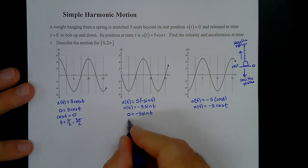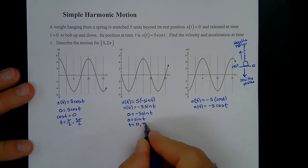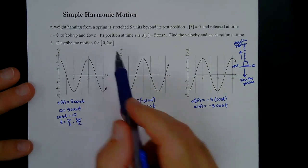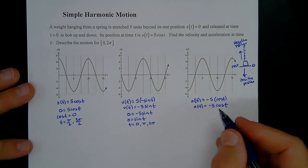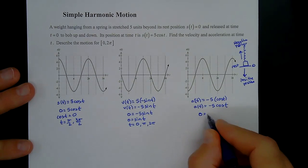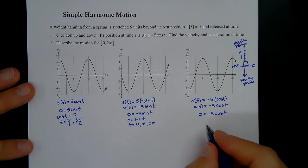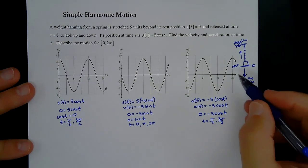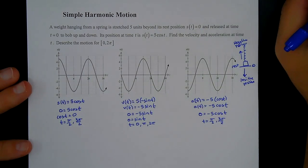We're only describing from 0 to 2π to keep it simple. For the acceleration, we set −5cos(t) = 0, so cos(t) = 0, which happens at t = π/2 and t = 3π/2. Now we're going to make a number line.